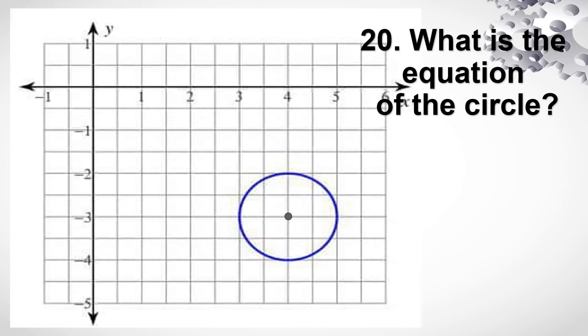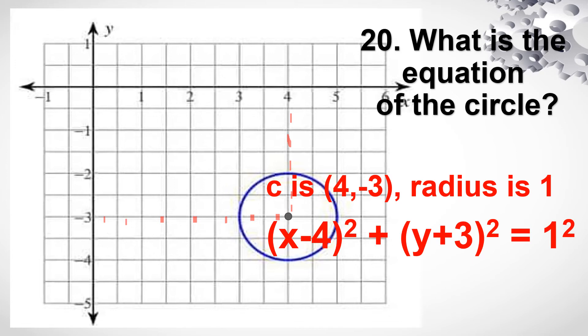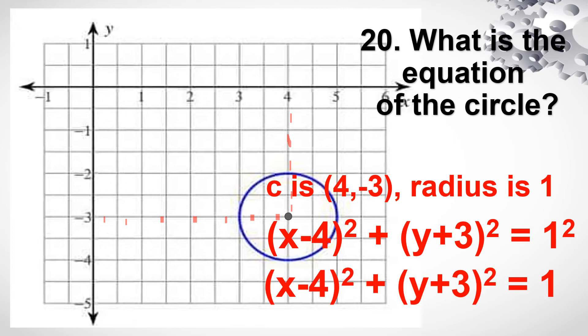Number 20. What's the equation of the circle? Knowing na yung center natin is at (4, -3), and yung radius natin is 1. So yung ating formula — substitute lang natin. So magiging x minus 4 squared plus y minus minus 3 — kaya naging plus 3 — squared is equal to 1 squared. So ang equation natin for this circle is the quantity of x minus 4 squared plus the quantity of y plus 3 squared is equal to 1.